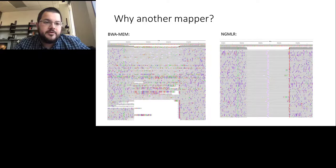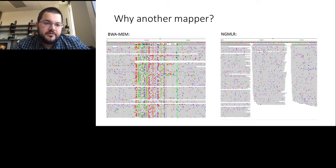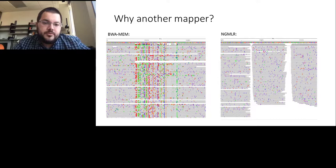Let's do another example. Again, with BWA-MEM we see a very noisy pattern with many colors, many mismatches, and little lines popping up indicating deletions. But when we map the same reads with NGMLR — and actually with lower runtime — we see that the middle block is actually inverted. So this would be an inversion rather than a deletion as the noisy alignment suggested.